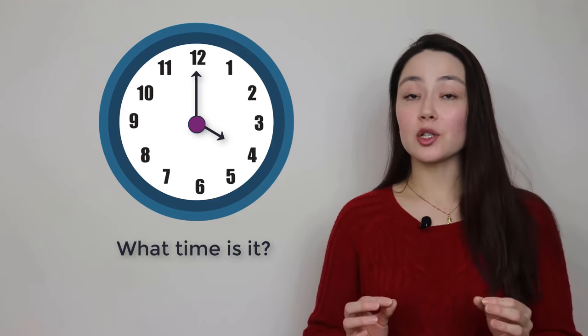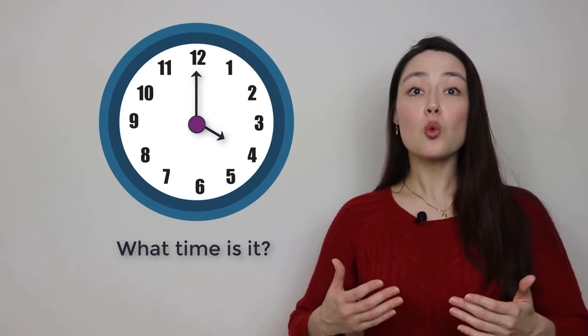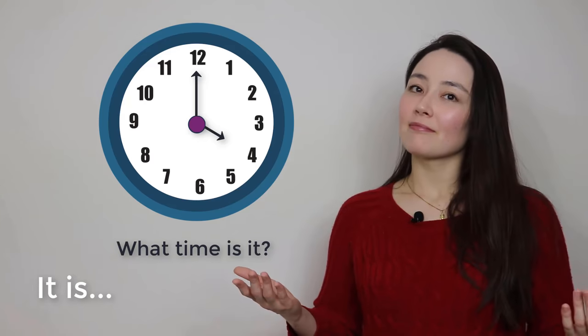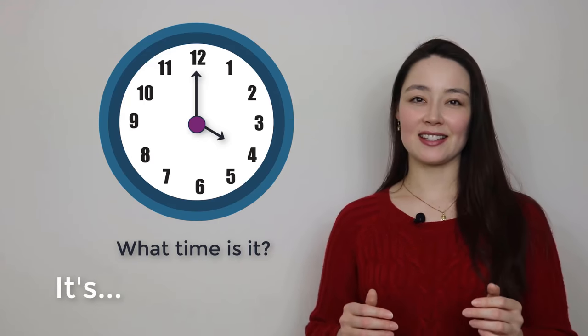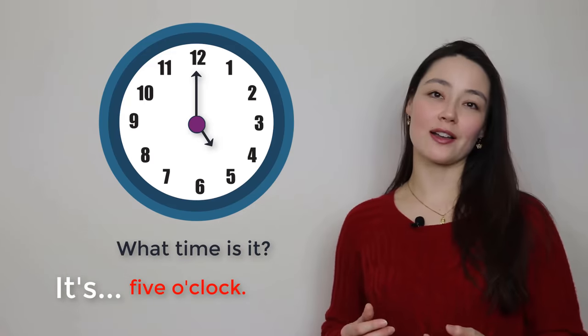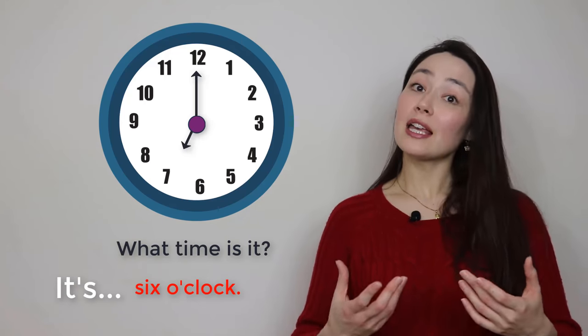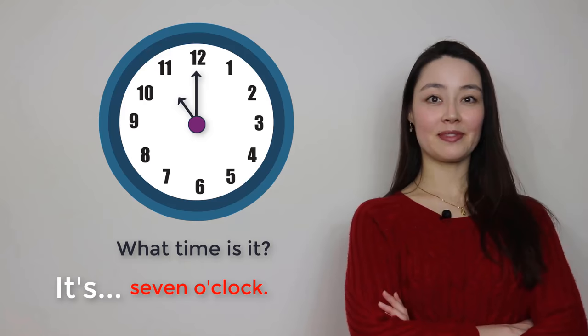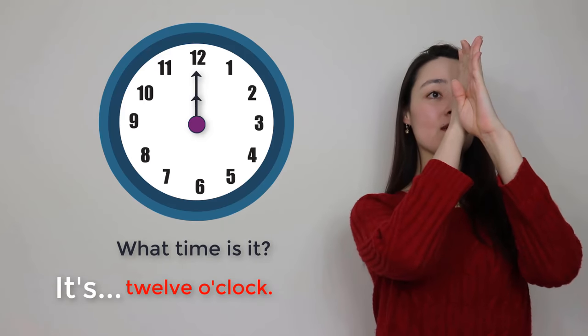In English when we speak about the time, we always say it is. Contracted? It's. It's five o'clock. It's six o'clock. It's seven o'clock. It's twelve o'clock.